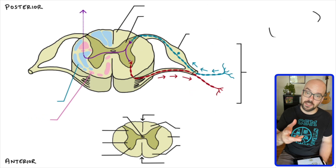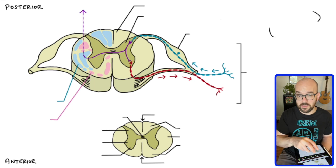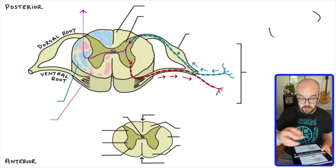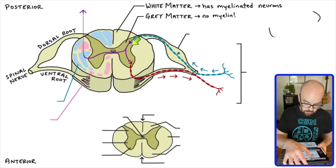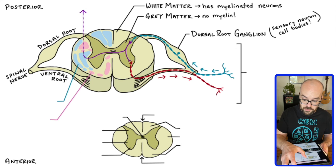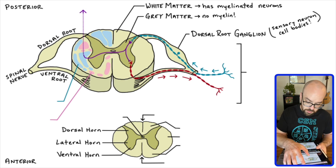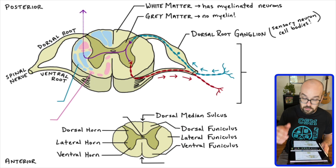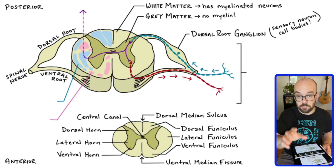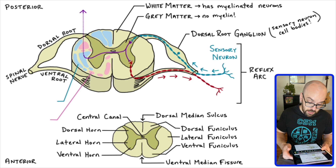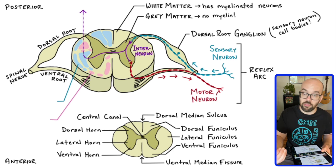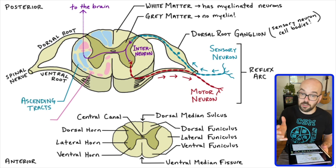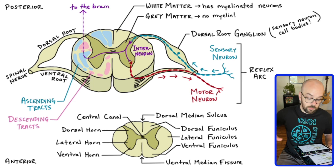Here's a blank diagram. The only way to learn this really well is to test yourself. Pause the video, see if you can label all the different parts of this diagram and explain what's happening. The answers: we've got the dorsal root and the ventral root, which join together to form a spinal nerve. White matter has myelin; gray matter has no myelin. The dorsal root ganglia contain the sensory neuron cell bodies. The three horns of the gray matter are dorsal, lateral, and ventral. The three funiculi of the white matter are also dorsal, lateral, and ventral. We have the dorsal median sulcus, the ventral median fissure, and the central canal containing cerebrospinal fluid. The reflex arc: sensory neuron → interneuron → motor neuron. The interneuron can also send signals across and up to the brain via ascending tracks, and motor signals from the brain travel down through descending tracks.